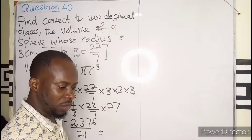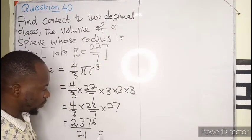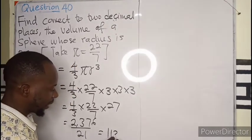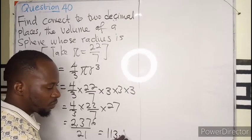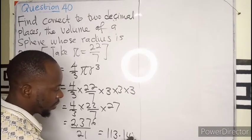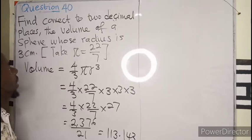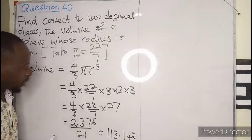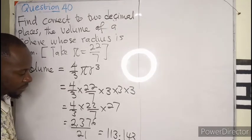So if we divide that by 21, we are going to have 113.143 correct to 2 decimal places. So if you are looking for 2 decimal places, 1, 2.